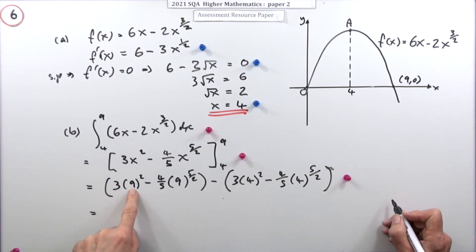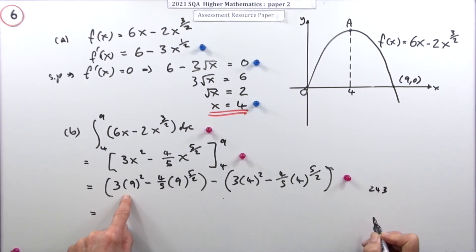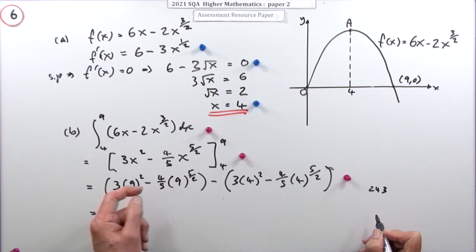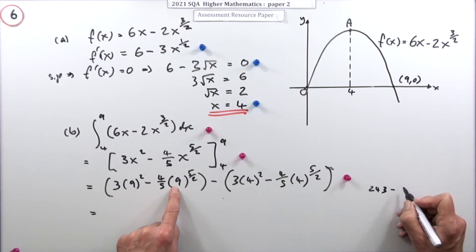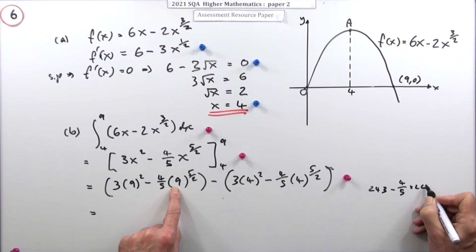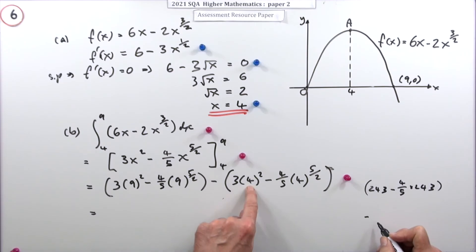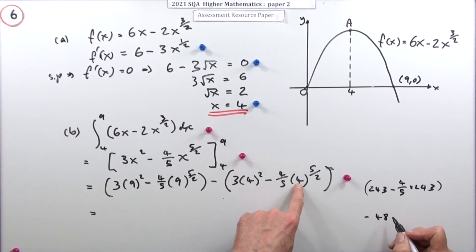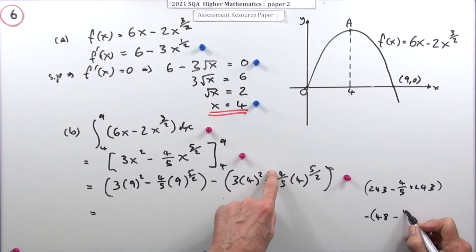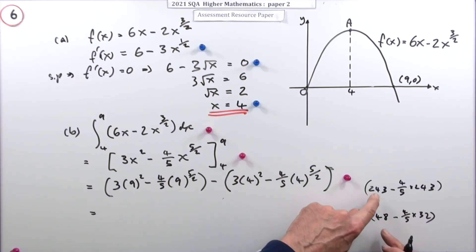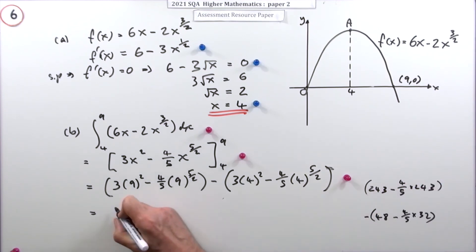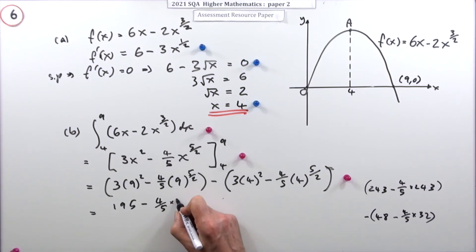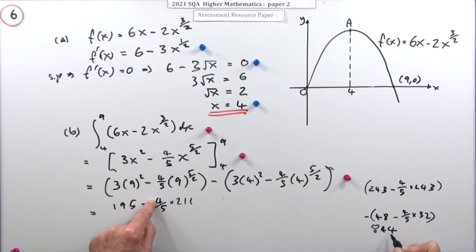Working it out: 9² = 81, and 3 × 81 = 243. For 9^(5/2), the square root of 9 is 3, so 3^5 = 243 as well. So the first bracket gives 243 − (4/5)(243). For x = 4: 3 × 16 = 48, and 4^(5/2) = 32, so the second bracket gives 48 − (4/5)(32). Combining the whole-number parts gives 195, and combining the fractional parts gives (4/5)(211) = 844/5 = 168.8. So the result is 195 − 168.8 = 26 and 1/5.